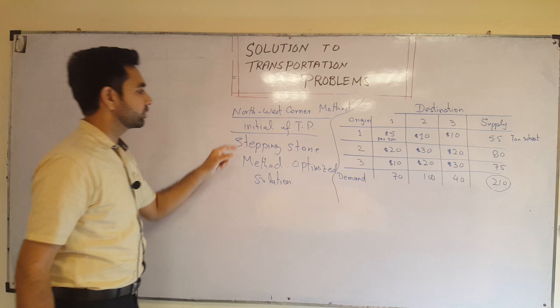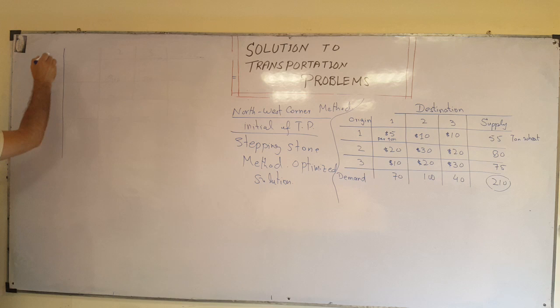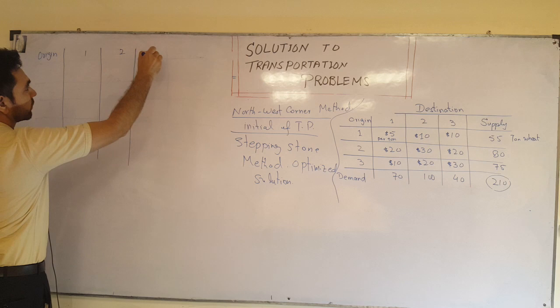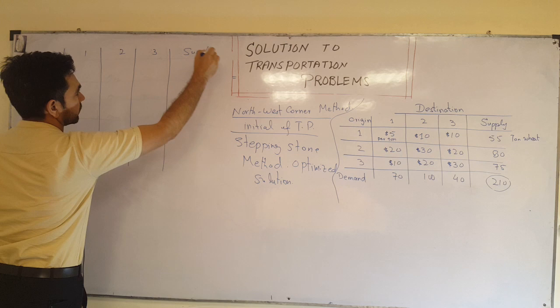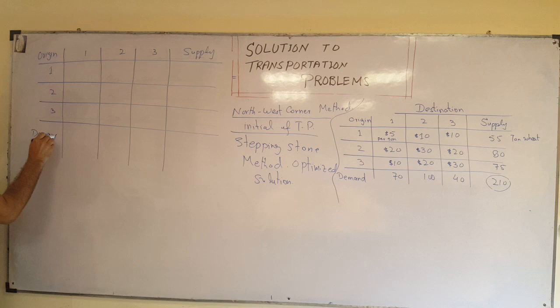Since supply and demand are equal, this is called a balanced transportation problem. To find the initial solution, we write the table again with origins as rows, cities as columns, and a supply column. We fill in the cost values as small numbers in each cell, along with the supply and demand values.